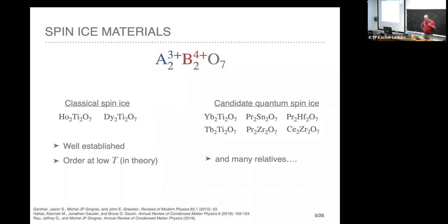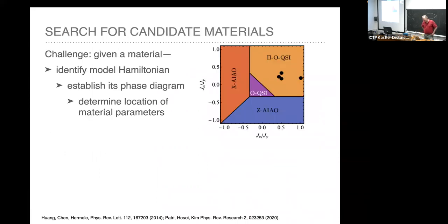Classical spin ices are strongly anisotropic Ising systems, but now people are looking at less strongly Ising systems where transverse terms in the Hamiltonian play an important role. Here is an incomplete list of systems which have been proposed as quantum spin ice candidates. If you actually look for a candidate quantum spin ice material, several challenges arise: first you need some promising material, then you need to identify a likely Hamiltonian, establish its phase diagram, and identify where the Hamiltonian parameters place your system.